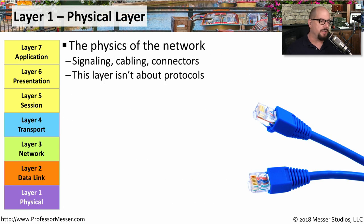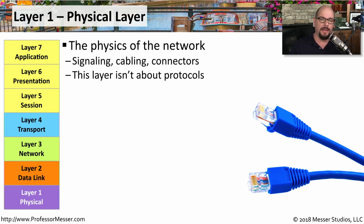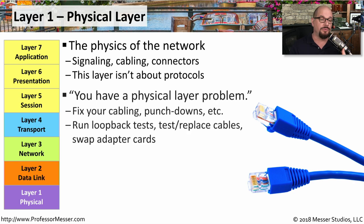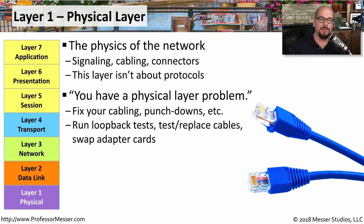Let's start at the bottom of the OSI model with the physical layer. The physical layer is where everything begins and ends on the network — it is the signal that transports our traffic across the network. You're not really dealing with a lot of protocols at the physical layer. We often refer to it as cables or fiber. If someone says you're having a physical layer problem, they mean there is a cable that's bad or a punch down that needs to be repaired. You would commonly run loopback tests, replace cables, and swap adapter cards to troubleshoot a problem at OSI layer one.